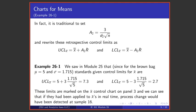In fact, it's traditional to use the symbol cap A₂ for 3 over little d₂ times square root of n, so that another form of these retrospective control limits is X-bar bar plus or minus A₂ R-bar.